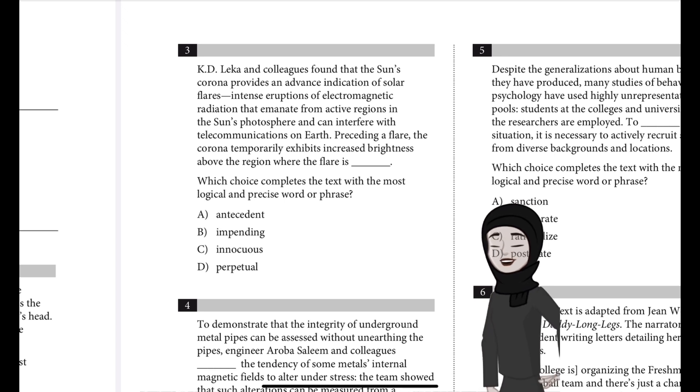Which choice completes the text with the most logical and precise word or phrase? Is it A. antecedent, B. impending, C. innocuous, or D. perpetual?